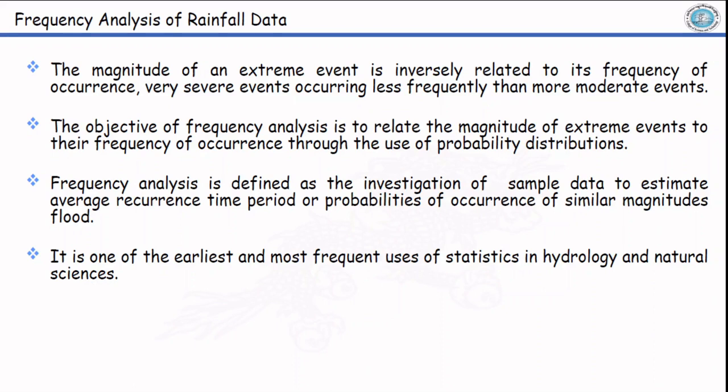The magnitude of an extreme event is inversely related to its frequency of occurrence, which means very severe events occurring less frequently than more moderate events. The objective of frequency analysis is to relate the magnitude of extreme events to their frequency of occurrence through the use of probability distributions.